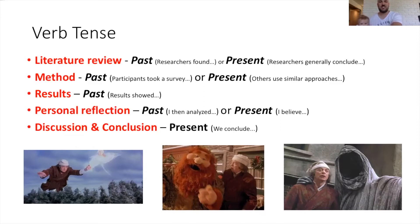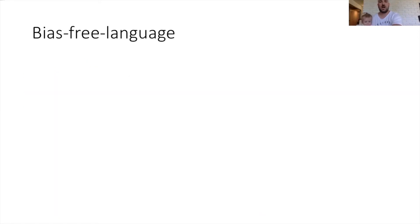In the discussion conclusion section, you're also going to write in the present tense. So what are the implications for the field right now? At times in the discussion section, you might also switch over to the future tense if you're talking about future studies and what they should do in the future.